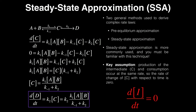The steady-state approximation is an assumption that says the rate of formation of the intermediate C is equal to the rate of consumption of C. Whatever C is being formed, it's immediately consumed at the same rate to form the product D. Even though there is always some concentration of C, the rate of change of the intermediate with respect to time is zero — meaning this concentration of C is not changing with time. That's a key assumption: the derivative of the concentration of the intermediate with respect to time is zero.